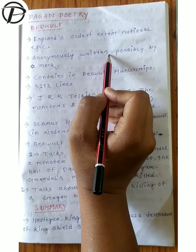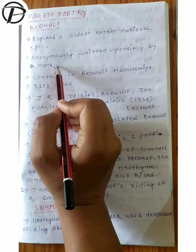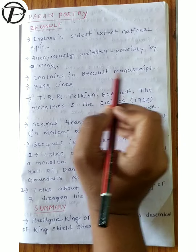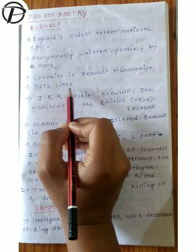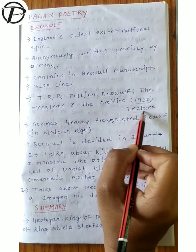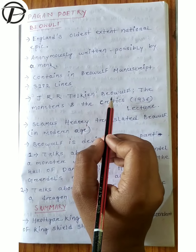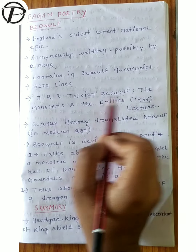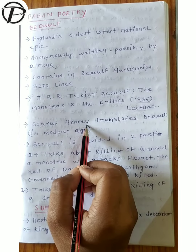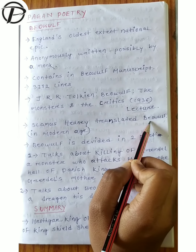There is the anonymity of writing. Beowulf is considered to have possibly been written by a monk. It is contained in a manuscript of 3182 lines. In 1936, in a lecture, J.R.R. Tolkien represented Beowulf as 'Beowulf: The Monsters and the Critics,' and Seamus Heaney also translated Beowulf in the modern age - so you can tell how famous it is.